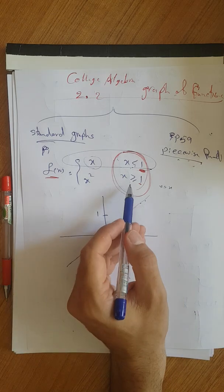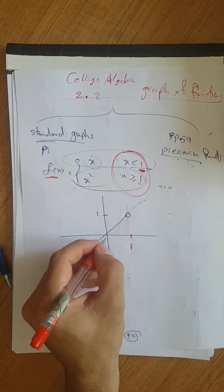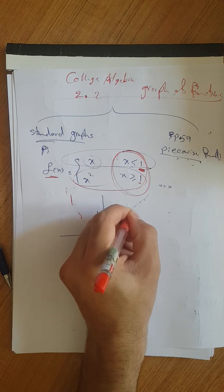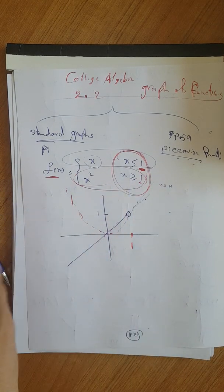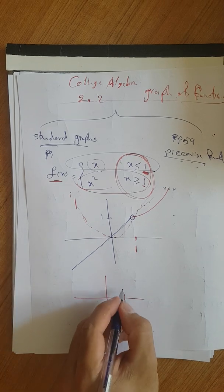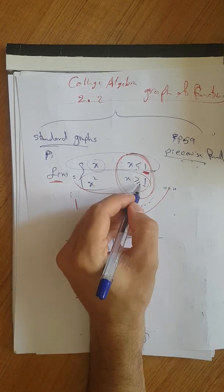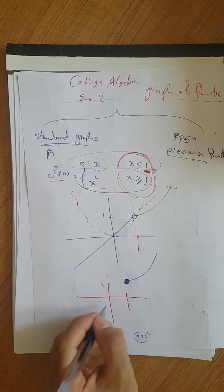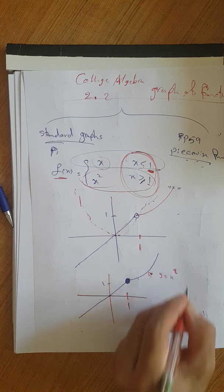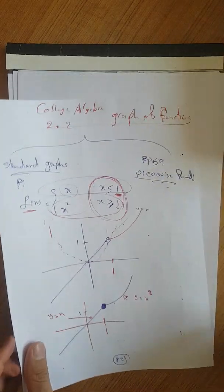For the second part, y equals x squared — I know the graph of x squared. Since the condition is x greater than or equal to 1, we keep only that part. So our combined graph shows the x squared part for x greater than or equal to 1, filled dot at x equals 1, and the y equals x part for x less than 1. That's the complete piecewise graph.